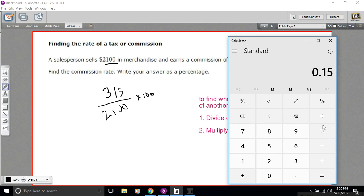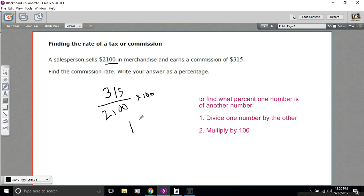Which is the same as moving this decimal point two places to the right. That's 15 percent. So that is how to find the percent of one number of another number.